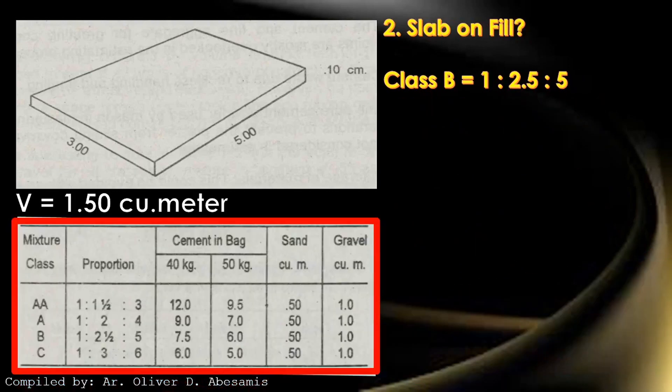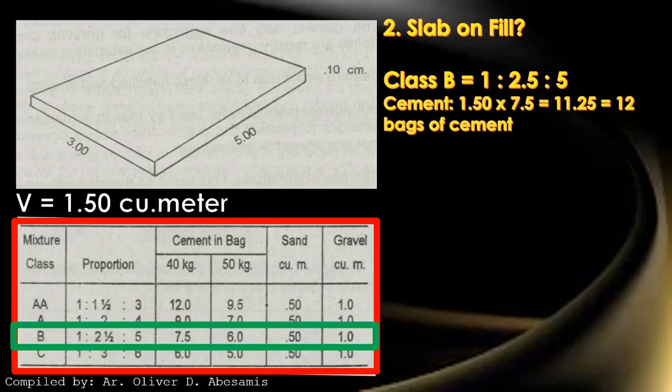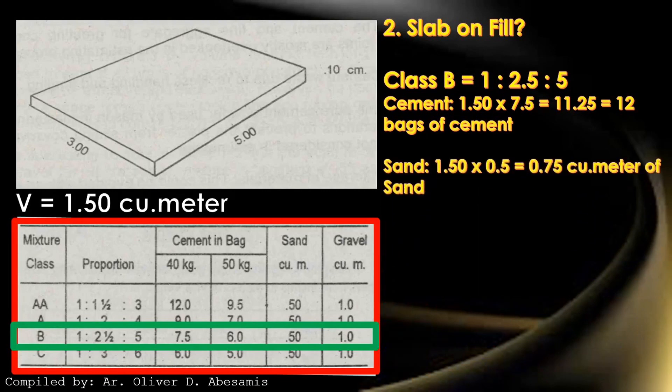For cement, 1.5 times 7.5 is equal to 11.25 or 12 bags of cement. For sand, 1.5 times 0.5 is equal to 0.75 cubic meter of sand. For gravel, 1.5 times 1 is equal to 1.5 cubic meter of gravel.